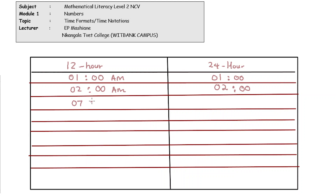If it's seven o'clock in the morning it's still AM because we are still before midday, and the 24-hour clock will also display 07:00 — but without the AM/PM. At nine o'clock in the morning the 24-hour clock displays 09:00, again without the AM/PM notation.